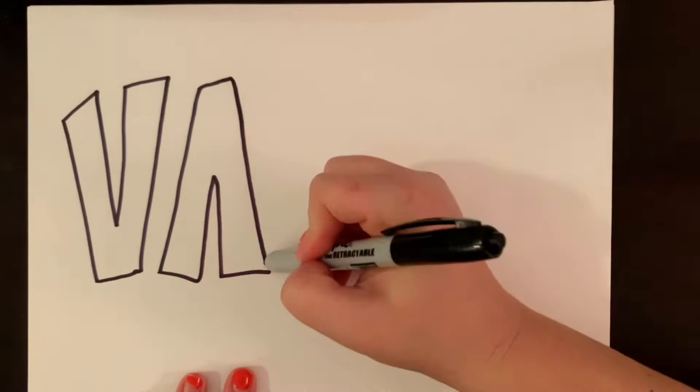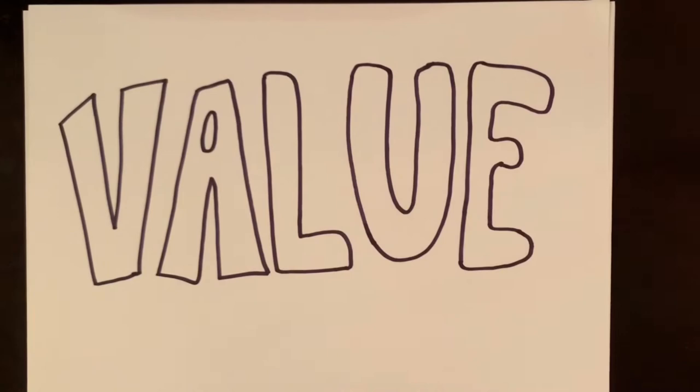Hi friends! Welcome to Art Today. We are going to be talking about value. Value is the different shades and tints of one color. I'm going to be using different values of purple to color in the letters.